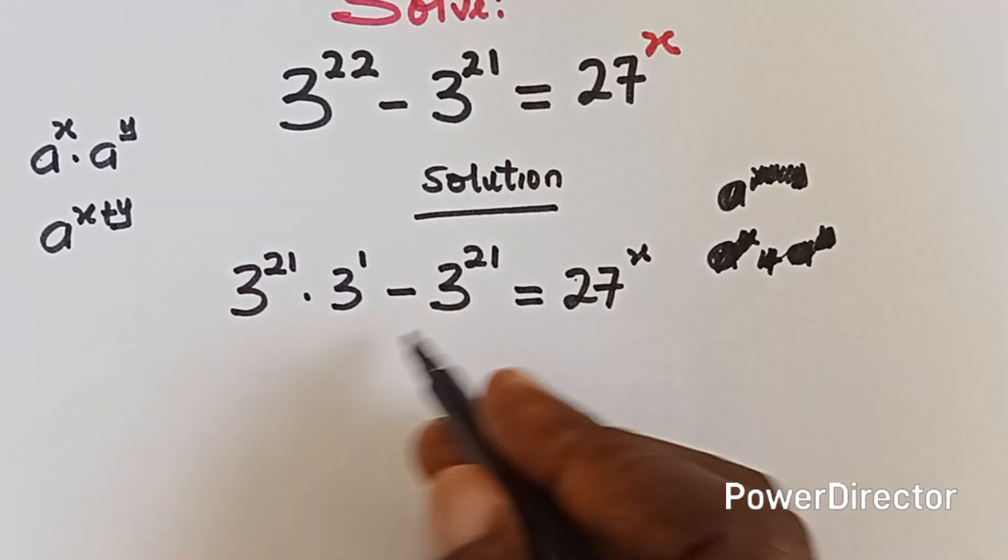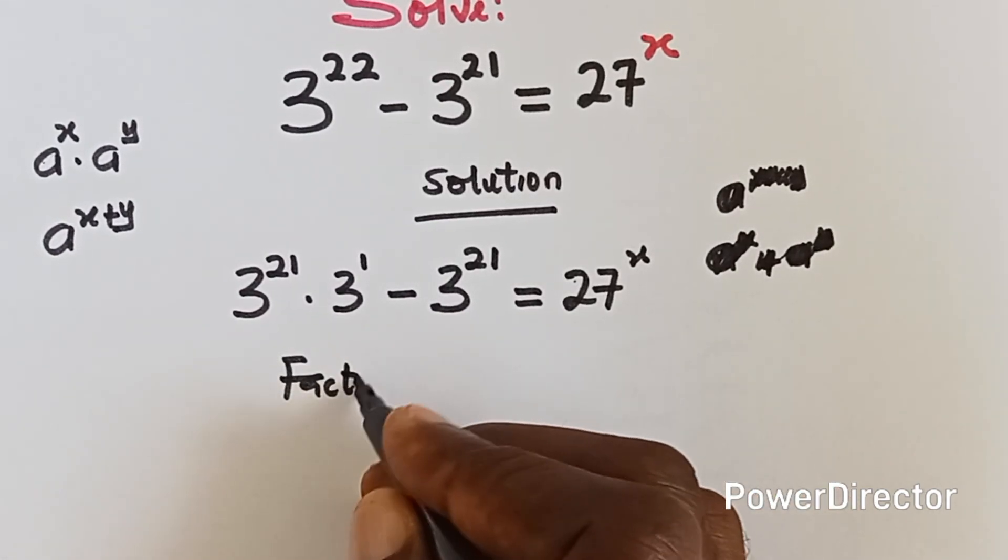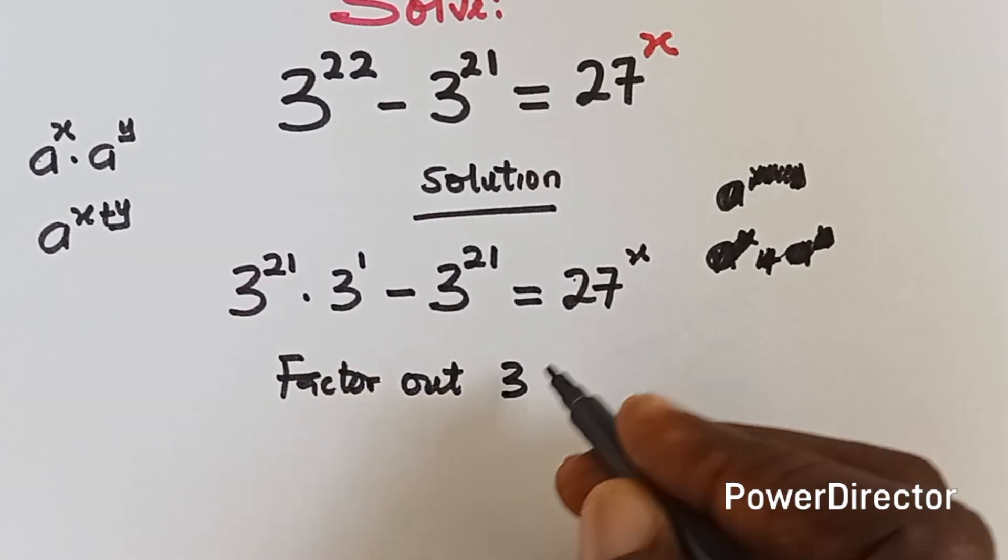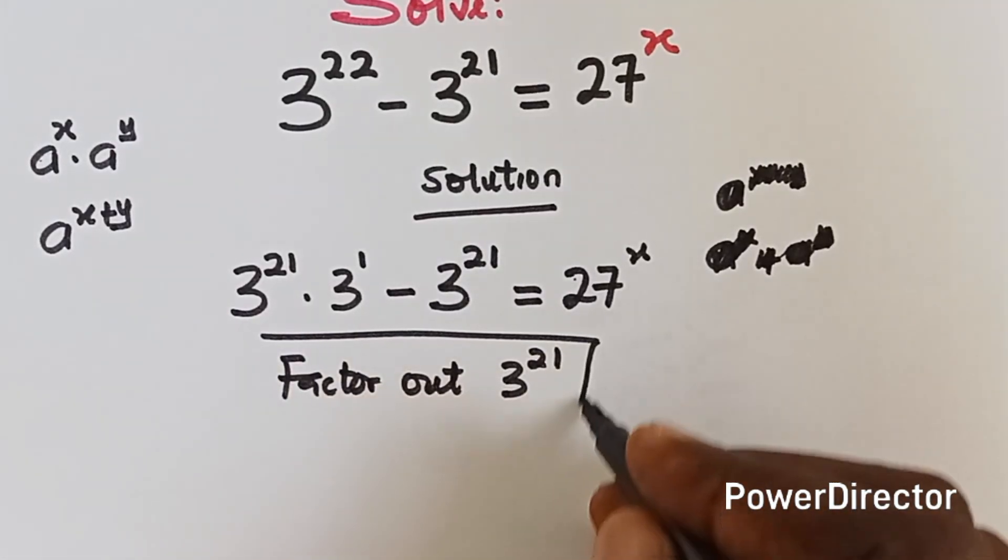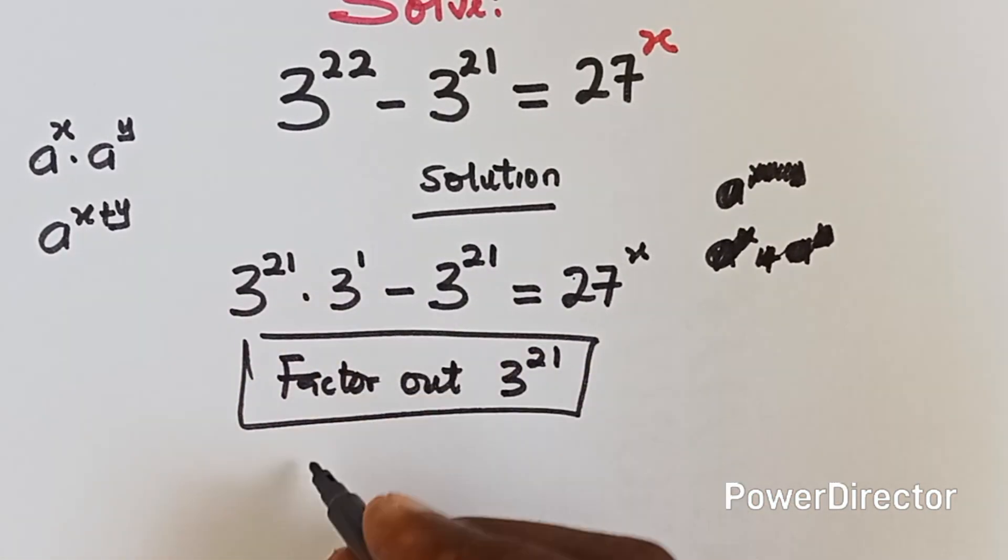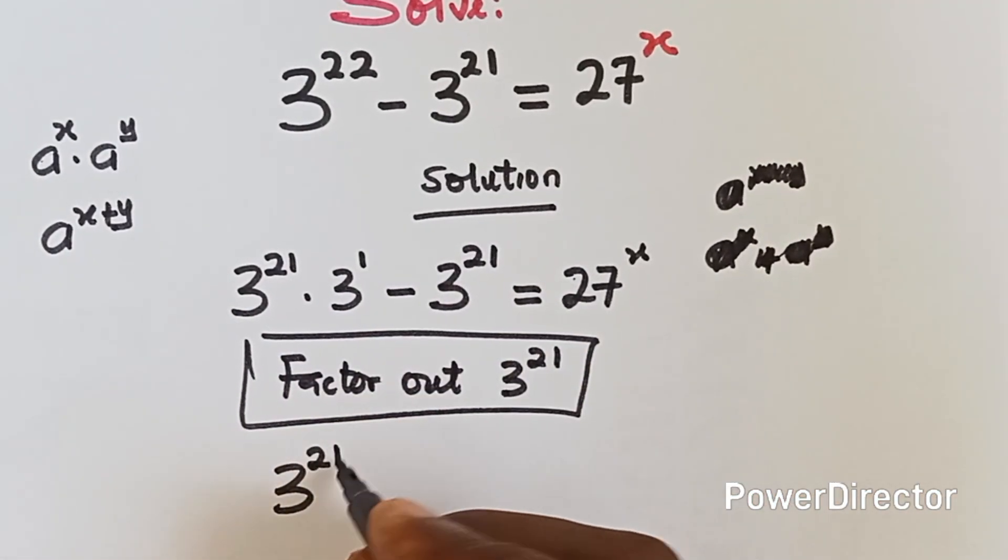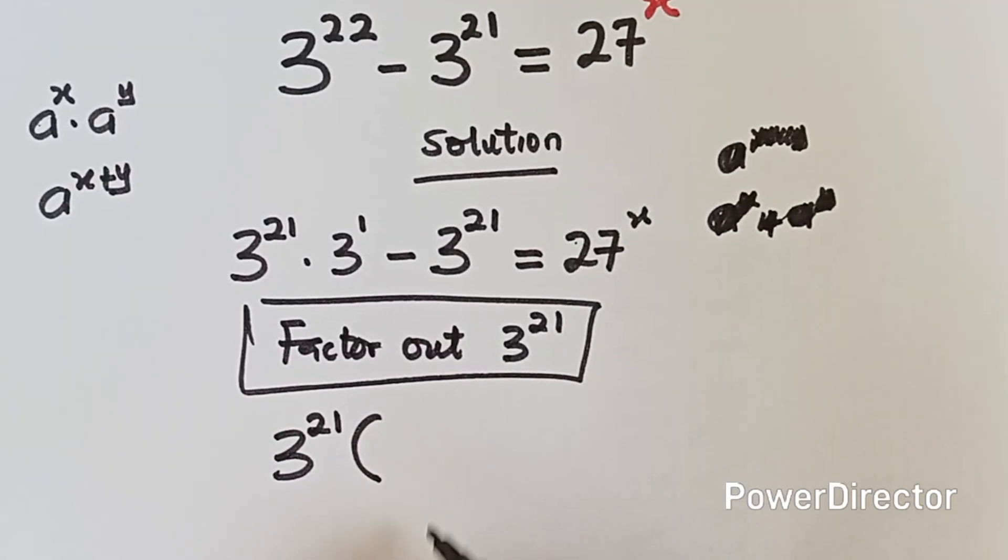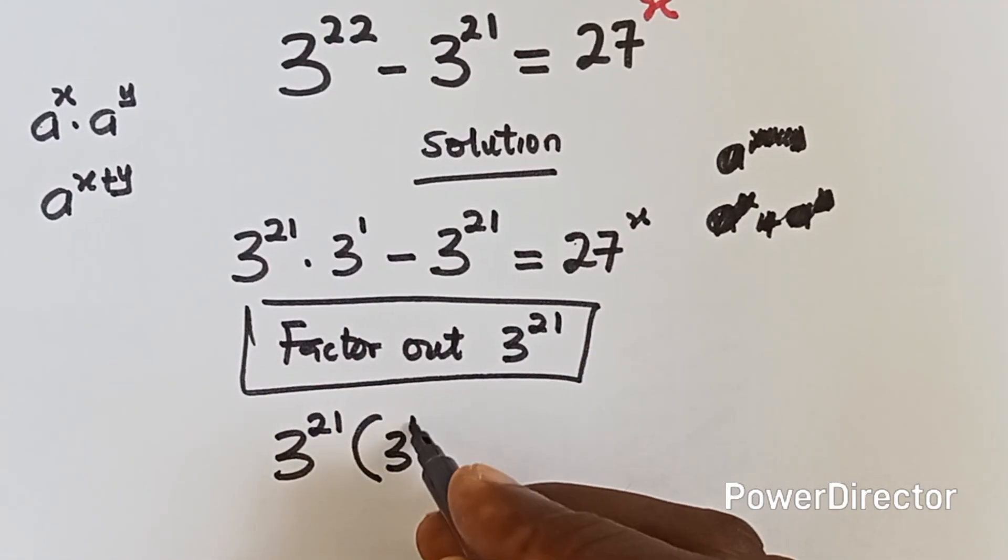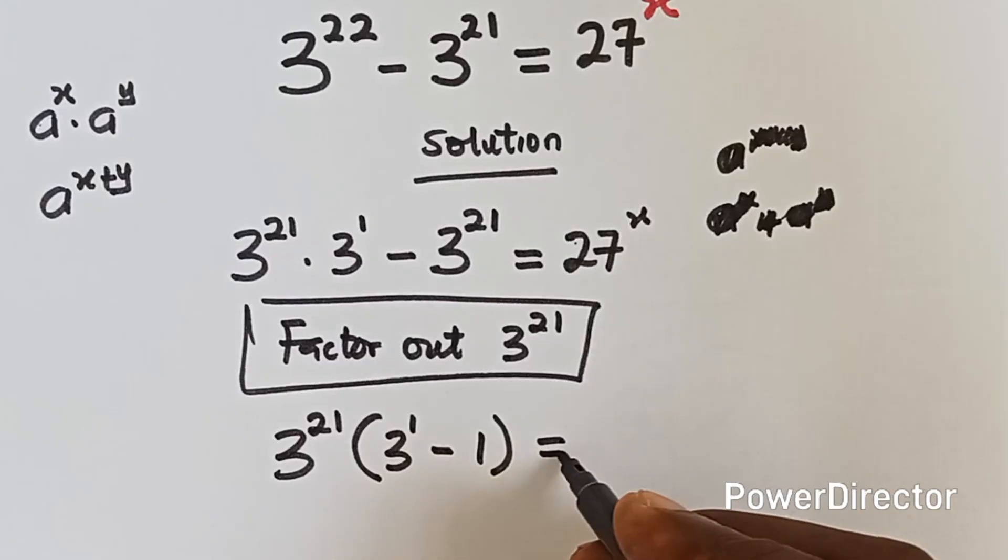So here we can factor out, let's factor out 3 raised to power 21. Okay, if you factor that out, we have 3 raised to power 21. Then what do we have here? We have 3 raised to power 1 minus what do we have here? We have 1.